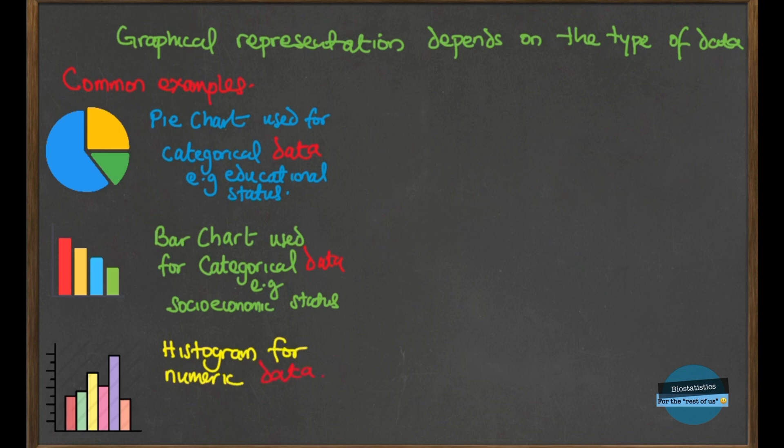This is a histogram — it's for numeric data. An example is age or height. The histogram shown here is displaying the age distribution of respondents in a survey. So we've now covered pie chart, bar chart, and histogram.